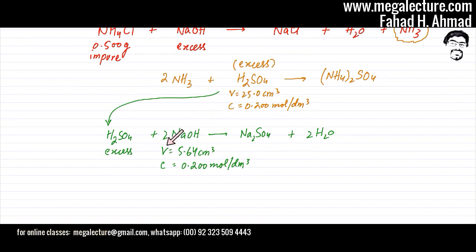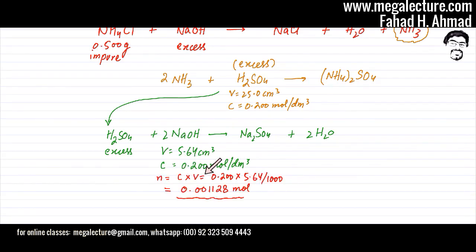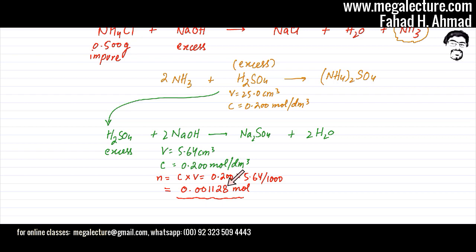We're going to find the moles of NaOH first. Volume and concentration are provided, so moles = concentration × volume. That gives 0.200 × (5.64 ÷ 1000) = 0.001128 moles. When stating the answer, round to three significant figures: 0.00113 moles.